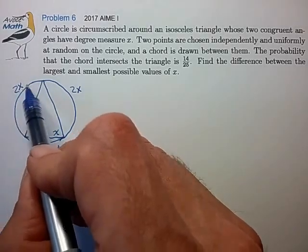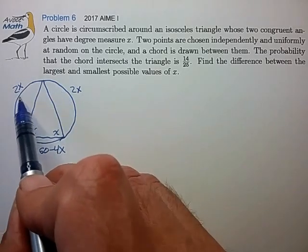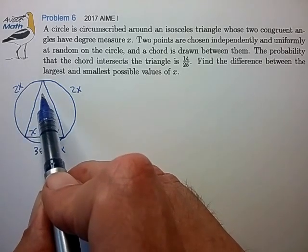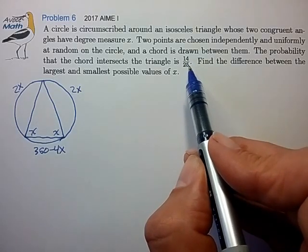We're trying to place points around this circle and trying to figure out if the chord drawn between those points intersects the triangle. And we know that the probability that they intersect is 14 over 25.